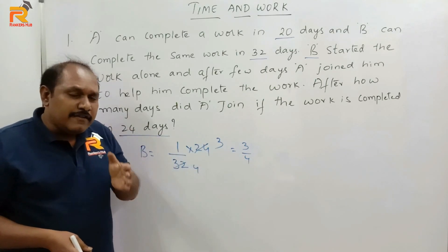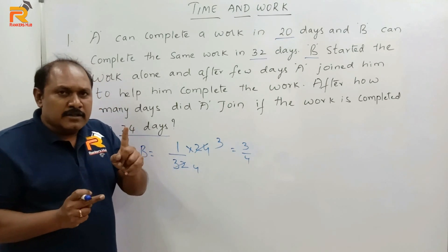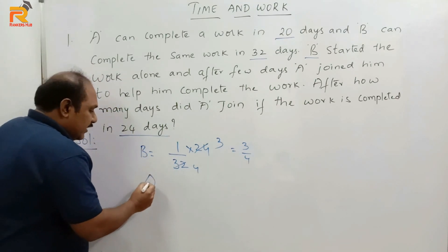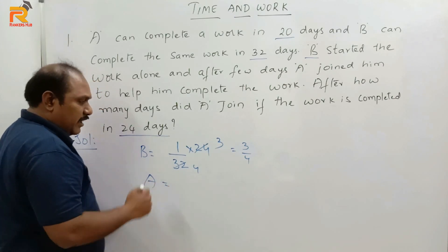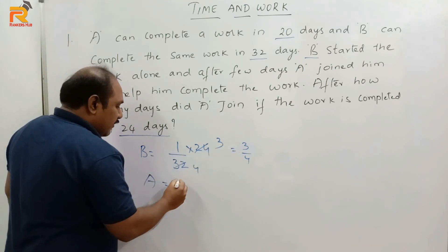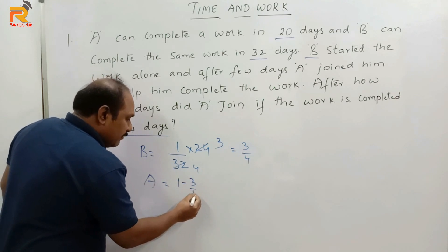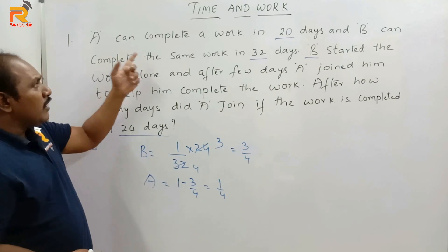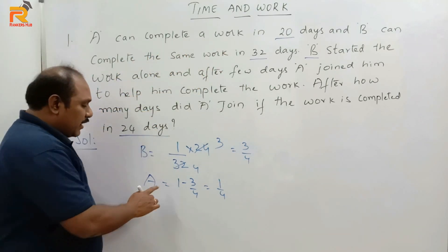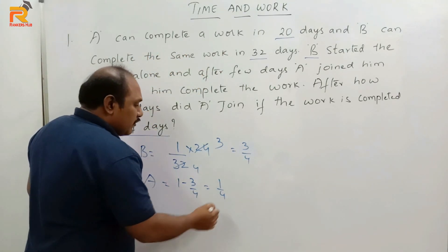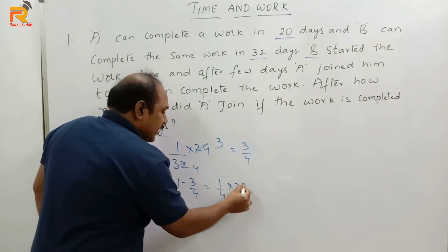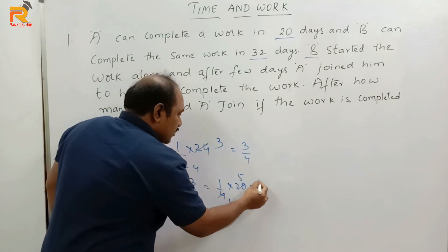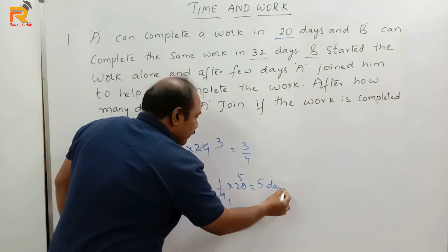We are assuming the total work is 1, so the remaining work is done by A. A did the remaining part, which is 1 minus 3/4, that is 1/4. To do the total work, A takes 20 days. But A is doing only 1/4 of the work, so he needs 1/4 of 20 days, which is 5 days. So A worked for 5 days.